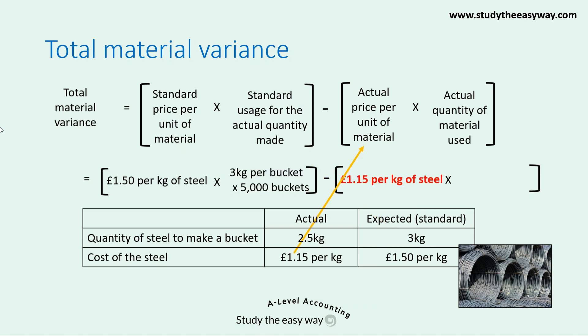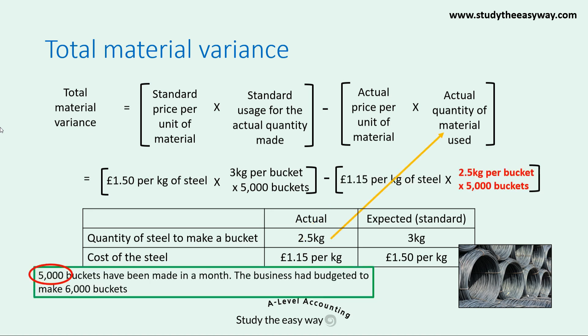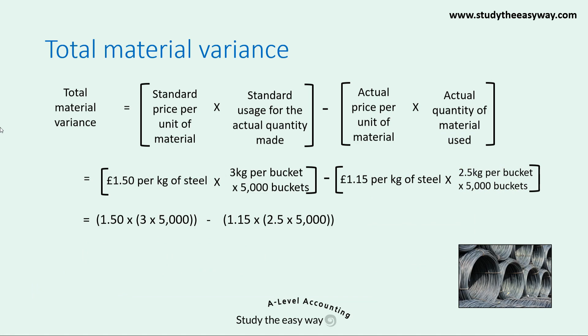For the second bracket: the actual price per unit was £1.15 per kilogram, multiplied by the actual quantity used — 2.5 kilograms per bucket times 5,000 buckets. Simplifying gives £22,500 as the expected cost minus the actual cost of £14,375, confirming the total material variance of £8,125 favourable, because the actual cost of materials used was lower than the business had expected.